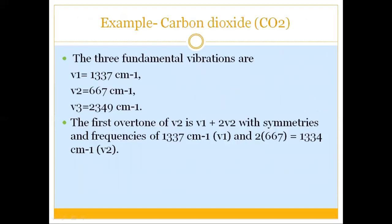An example of Fermi resonance is in the carbon dioxide IR spectrum. The three fundamental vibrations are at 1337, 667, and 2349 per centimeter. The first overtone of the 667 cm⁻¹ band is approximately 1334 cm⁻¹, which is very close to the fundamental at 1337 cm⁻¹, so Fermi resonance occurs and two peaks are observed in this region.